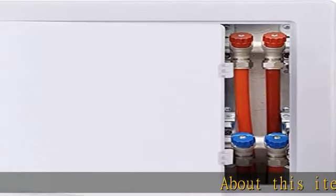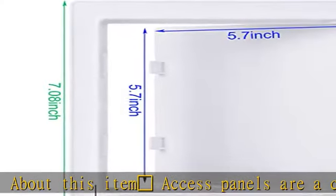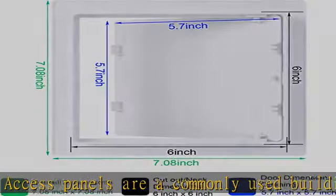About this item: White Heavy Checkmark Access Panels are a commonly used building device that provide easy access to plumbing, electrical, HVAC or duct systems.